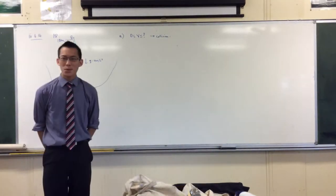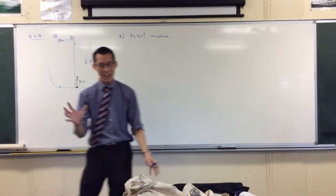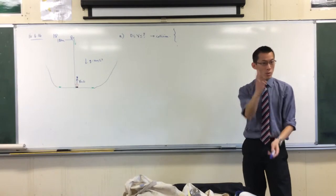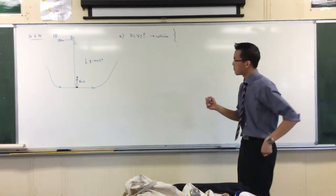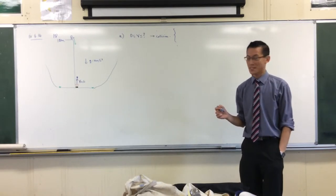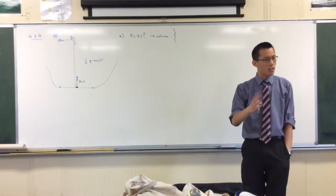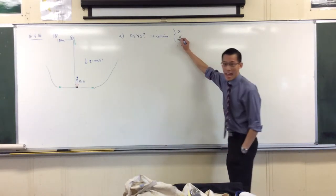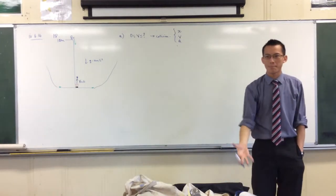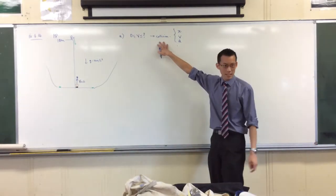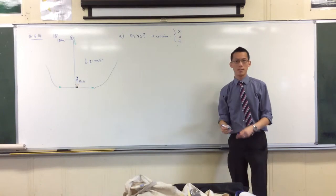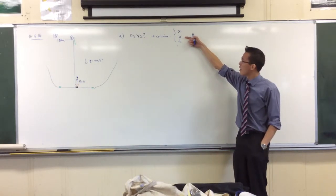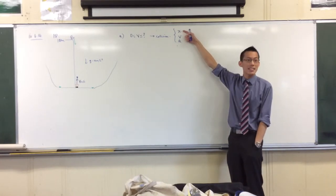We're looking at straight line motion, and there are three quantities we keep track of: displacement, velocity, and acceleration — all with respect to time. Since I'm interested in a collision, it'll be about displacement. I don't care if they're traveling at the same speed — I want to know when they are at the same place.